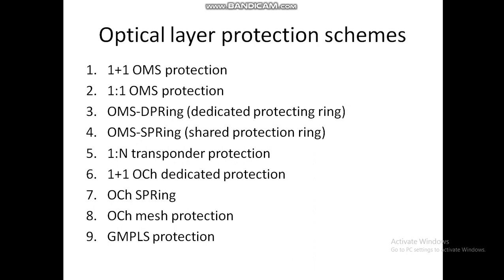In 1+1 OMS protection, the composite WDM signal is divided into two diverse paths using an optical splitter at one end, and a switch is used to select the better signal among them. The next scheme is 1:1 OMS protection. This protection scheme is somewhat similar to what we use in SONET protection; it supports low priority traffic and the ability to have N working schemes sharing a single protection system.